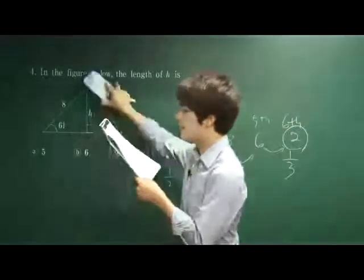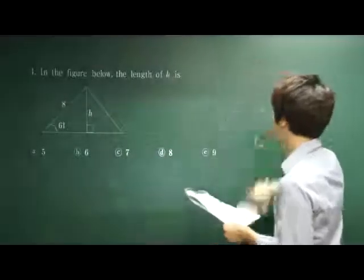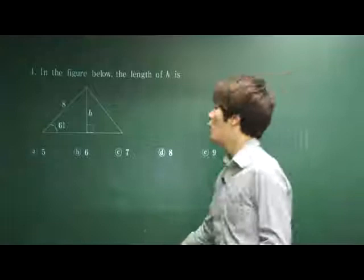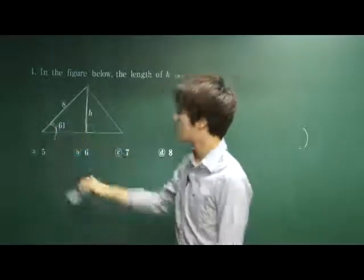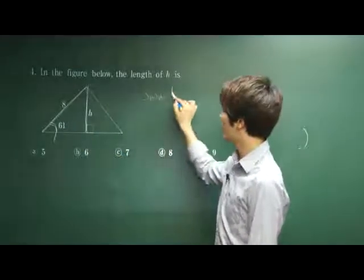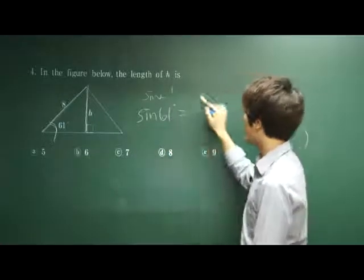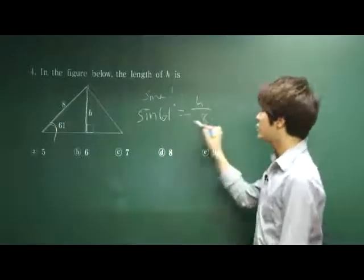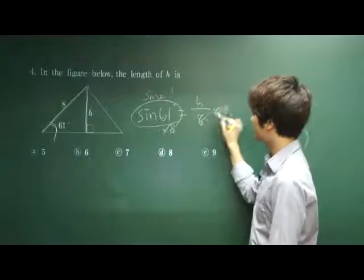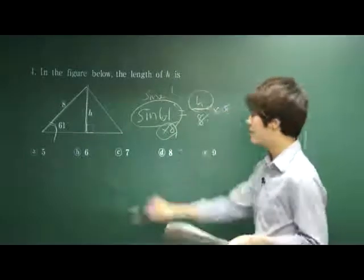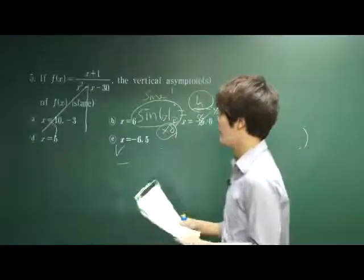Number 4. In the figure below, the length of h is. So we are given a triangle, and we are looking for the h of this triangle. What value should we use? Sine. The sine 61 degree is equal to h over 8. Simple. Just put it in your calculator, sine 61 times 8. You will find h. The value got to be 7. C is our correct answer.